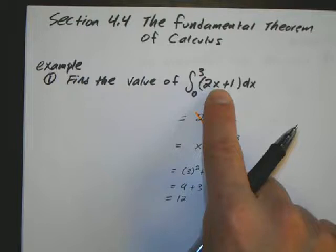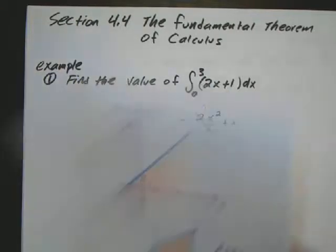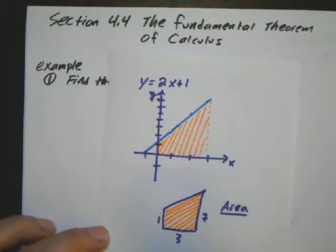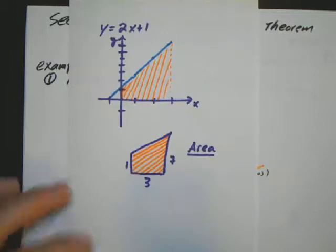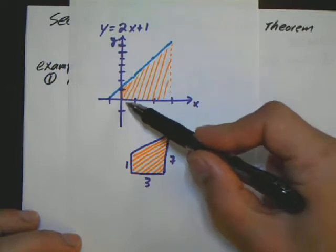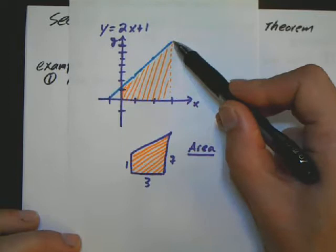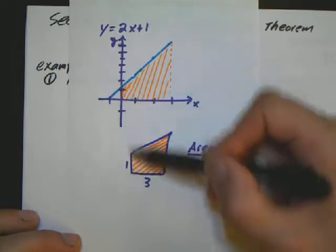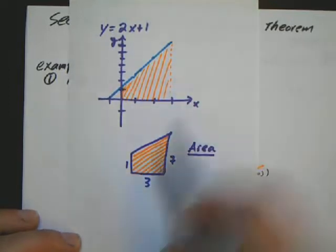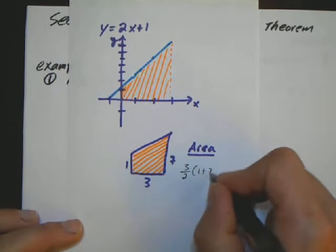And I can confirm this graphically, because I can draw the graph of 2x plus 1. And that's going to give me a trapezoid. If I were to draw 0 to 3, this is 2x plus 1. The height of this side of the trapezoid is 1, the height of this one is 7. This width is 3, so it's going to be 3 over 2 times 1 plus 7.